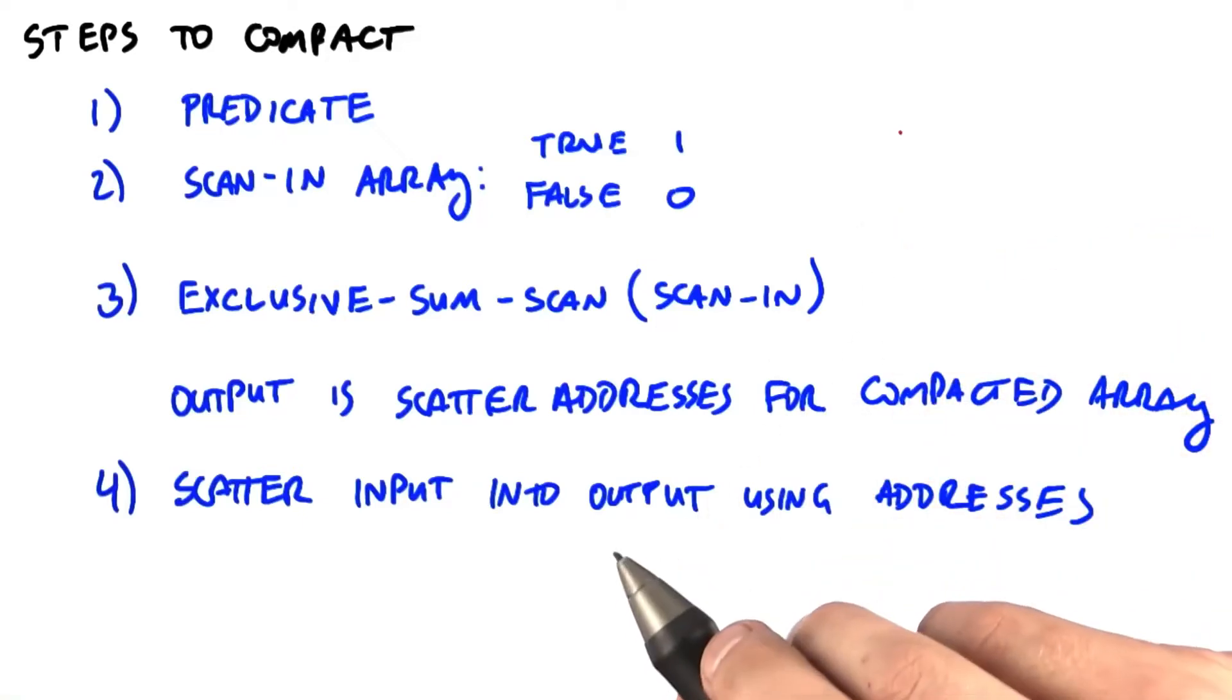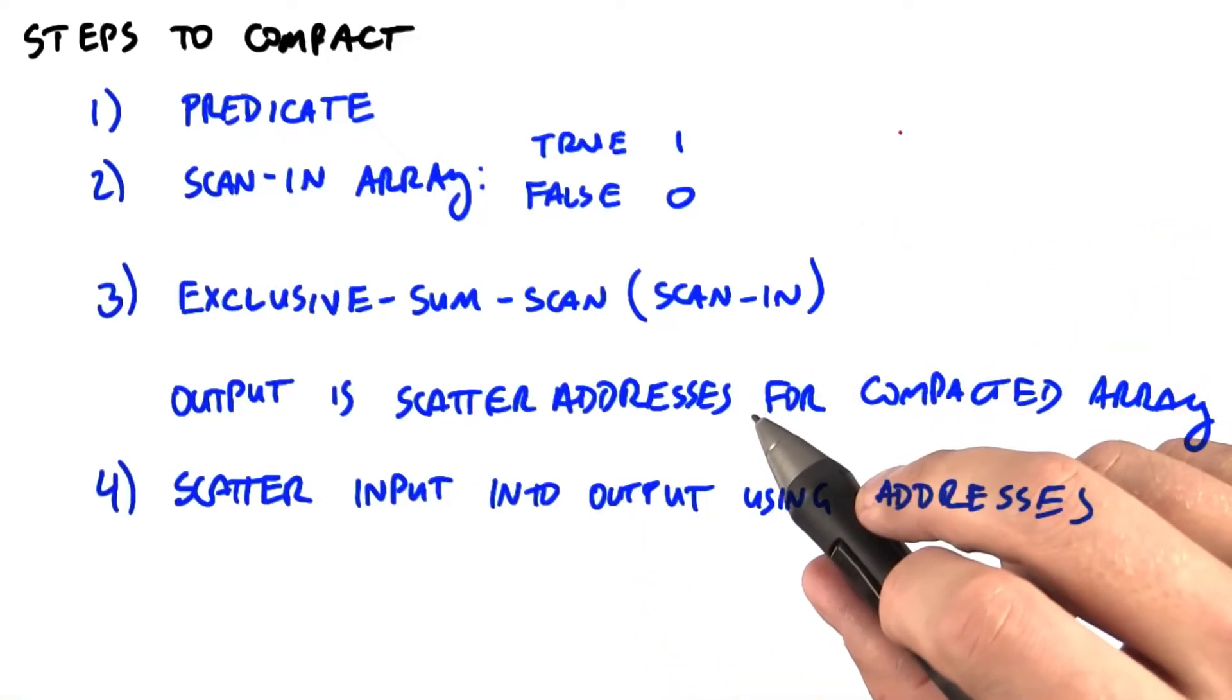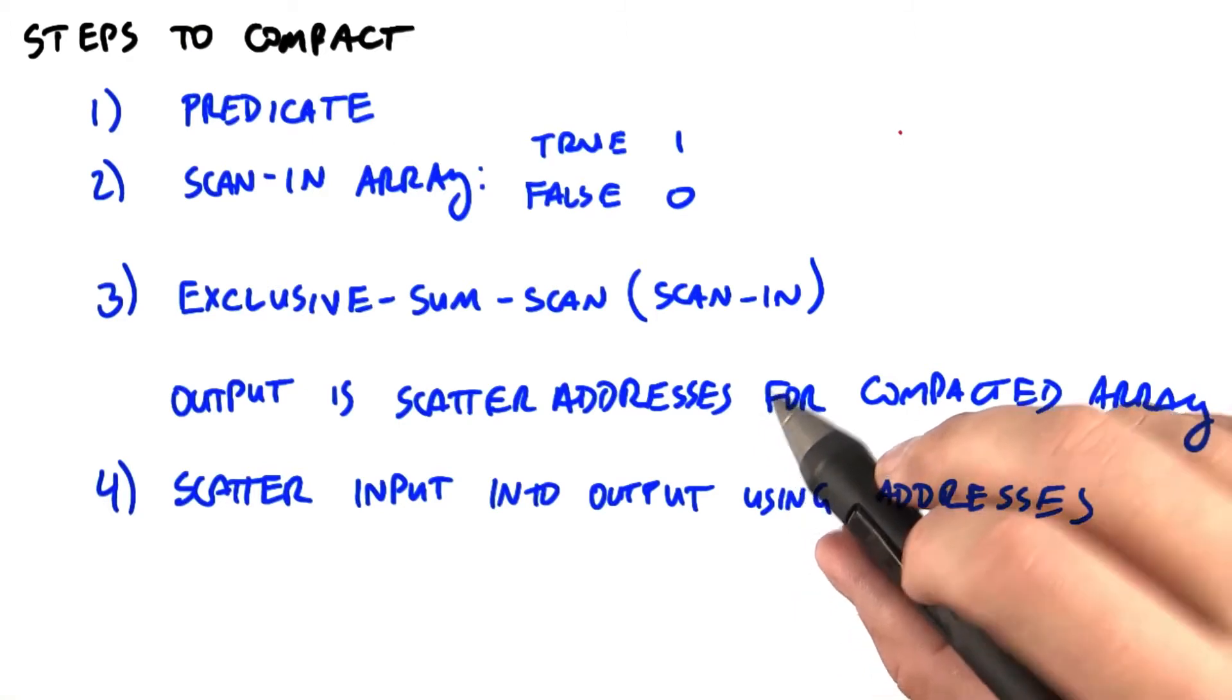So let's summarize how to compact. Conceptually, there are four steps, though an efficient implementation might combine these into fewer.